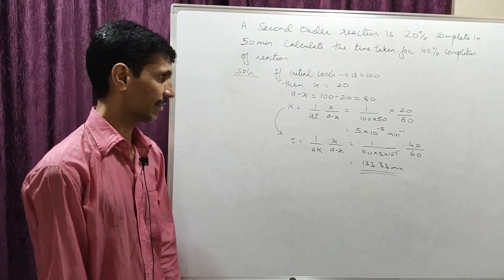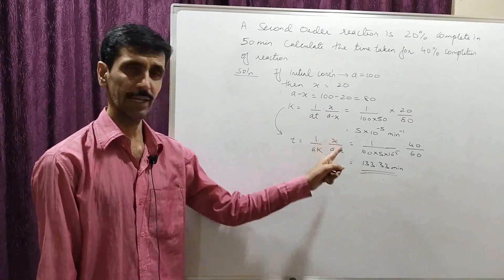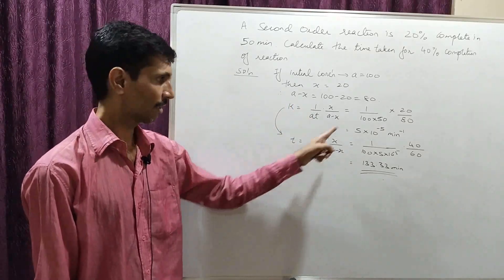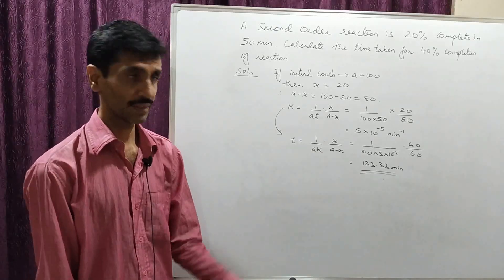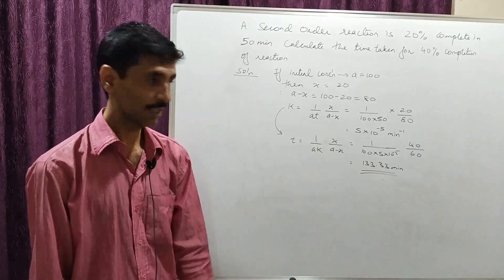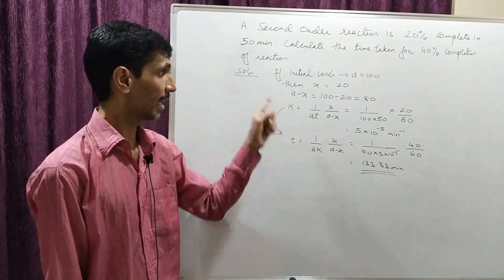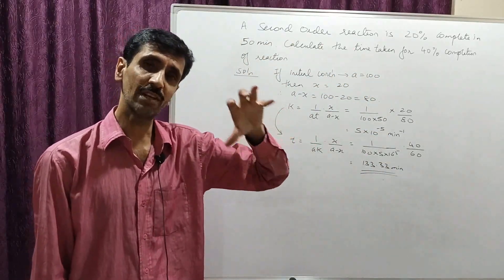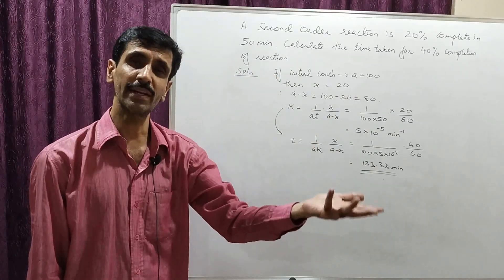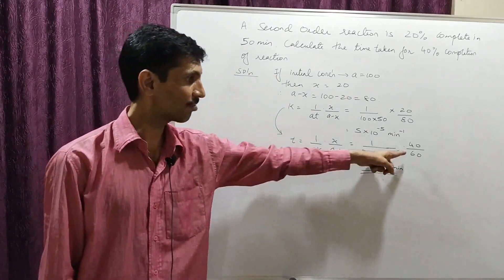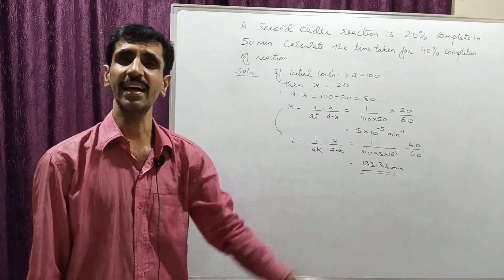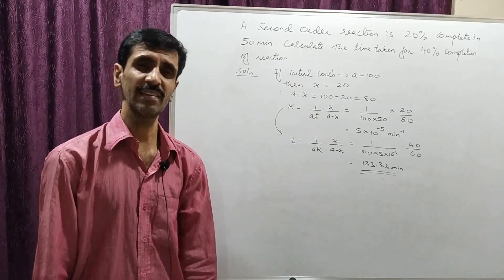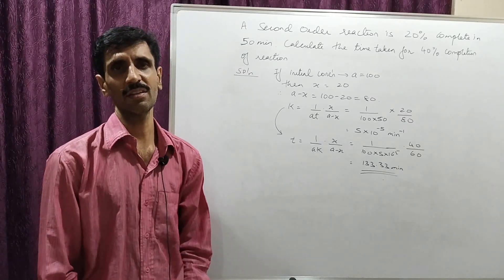Now calculating time t using t = (1/a·k) × x/(a−x). Substituting: a = 100, k = 5×10⁻⁵, x = 40 (for 40% completion), and a−x = 100 − 40 = 60. Calculating gives the final answer as 133.33 minutes. I hope you have understood this numerical very well.